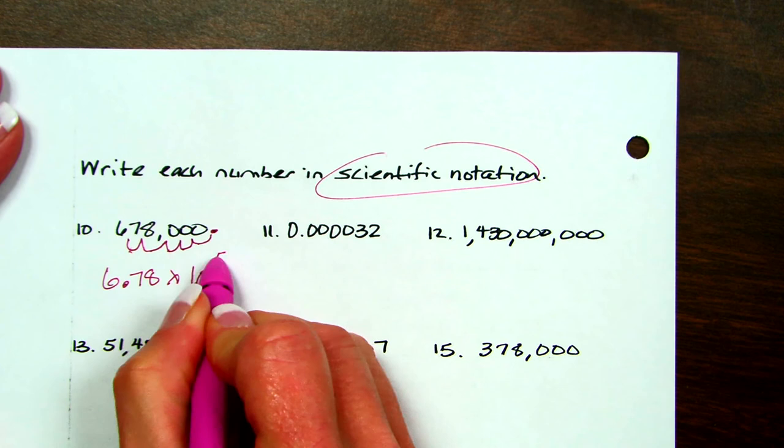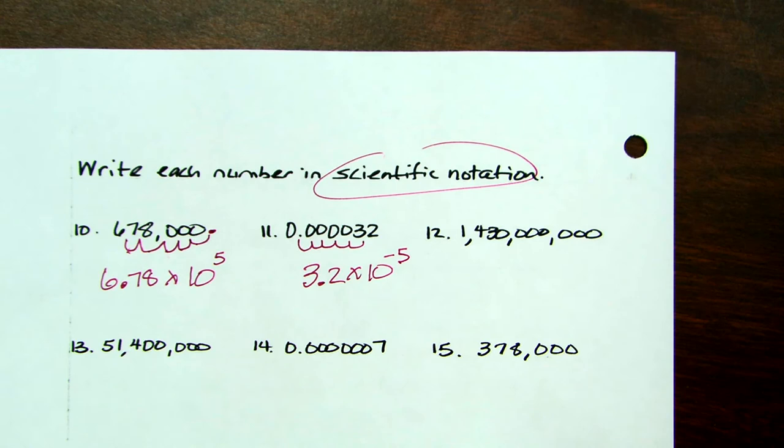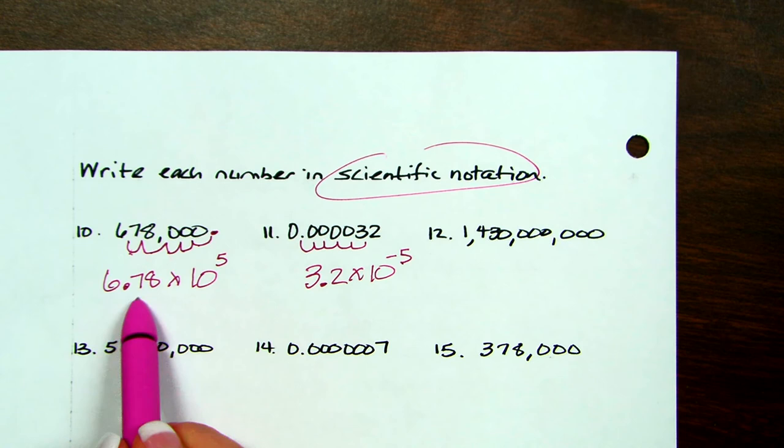And on this one, I take my decimal and I go 1, 2, 3, 4, 5. So 3.2 times 10 to the negative 5. Because a positive exponent represents going to the right when you're moving it. So that means you would go back 1, 2, 3, 4, 5. Negative means you go to the left. So that's what you do.